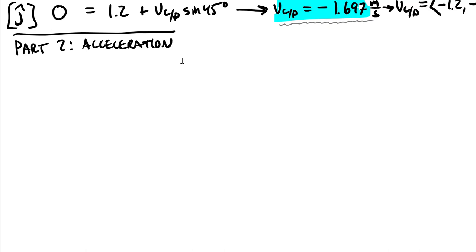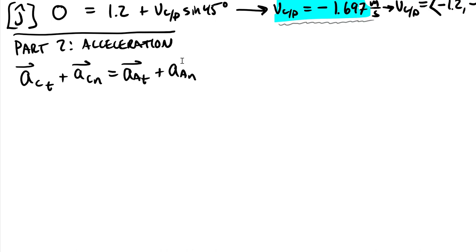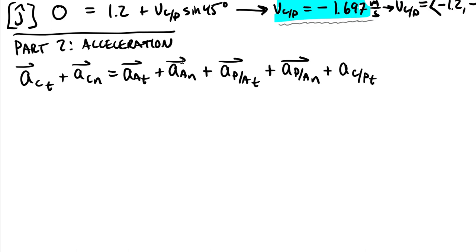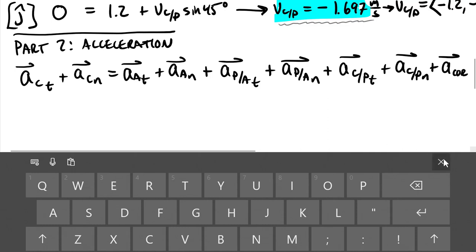Writing out the full equation with all tangential and normal terms: AC_T plus AC_N equals AA_T plus AA_N plus (acceleration of P relative to A)_T plus (acceleration of P relative to A)_N plus (acceleration of C relative to P)_T plus (acceleration of C relative to P)_N plus the Coriolis acceleration, which tags on at the end.